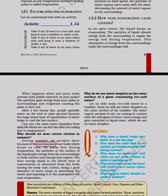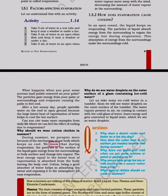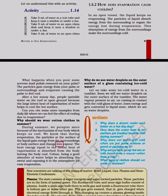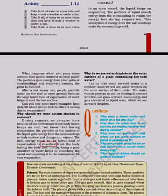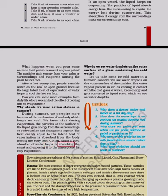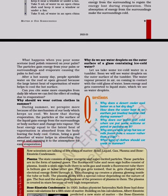Why should we wear cotton clothes in summer? During summer, we perspire more because of the mechanism of our body which keeps us cool. We know that during evaporation, the particles at the surface of the liquid gain energy from the surroundings or body surface and change into vapor. The heat energy equal to the latent heat of vaporization is absorbed from the body leaving the body cool. Cotton, being a good absorber of water helps in absorbing the sweat and exposing it to the atmosphere for easy evaporation. Why do we see water droplets on the outer surface of a glass containing ice-cold water? Let us take some ice-cold water in a tumbler. Soon we will see water droplets on the outer surface of the tumbler. The water vapor present in air, on coming in contact with the cold glass of water, loses energy and gets converted to liquid state, which we see as water droplets.